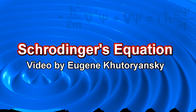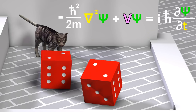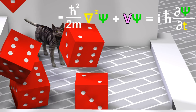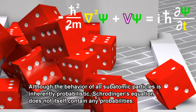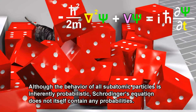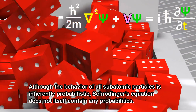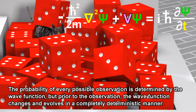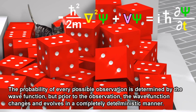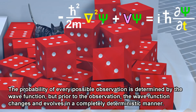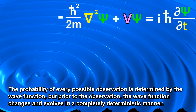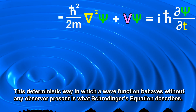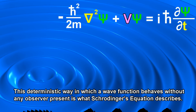According to quantum mechanics, all particles in the universe are described by what we call a wave function, and quantum wave functions are described by Schrödinger's equation. Although the behavior of all subatomic particles is inherently probabilistic, Schrödinger's equation does not itself contain any probabilities. The probability of every possible observation is determined by the wave function, but prior to the observation, the wave function changes and evolves in a completely deterministic manner. This deterministic way in which a wave function behaves without any observer present is what Schrödinger's equation describes.